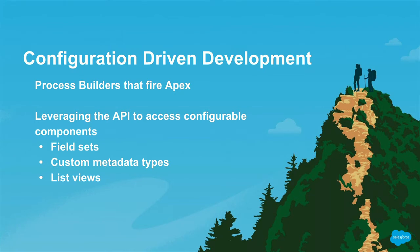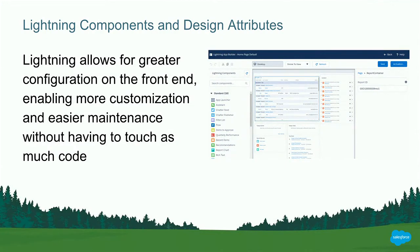There are also custom metadata types, which have recently replaced custom settings. These are great because they can act as feature flags or filter criteria that you hold in a database. Because they're special objects, they don't have SOQL limits, they persist between sandboxes, and they're very useful for configuration. List views are very similar — I just found out a couple months ago that a list view accessed via the REST API actually spits out a SOQL query. So you can have dynamic pages where users control the list views, and all you have to do is handle the SOQL query that gets fed in.